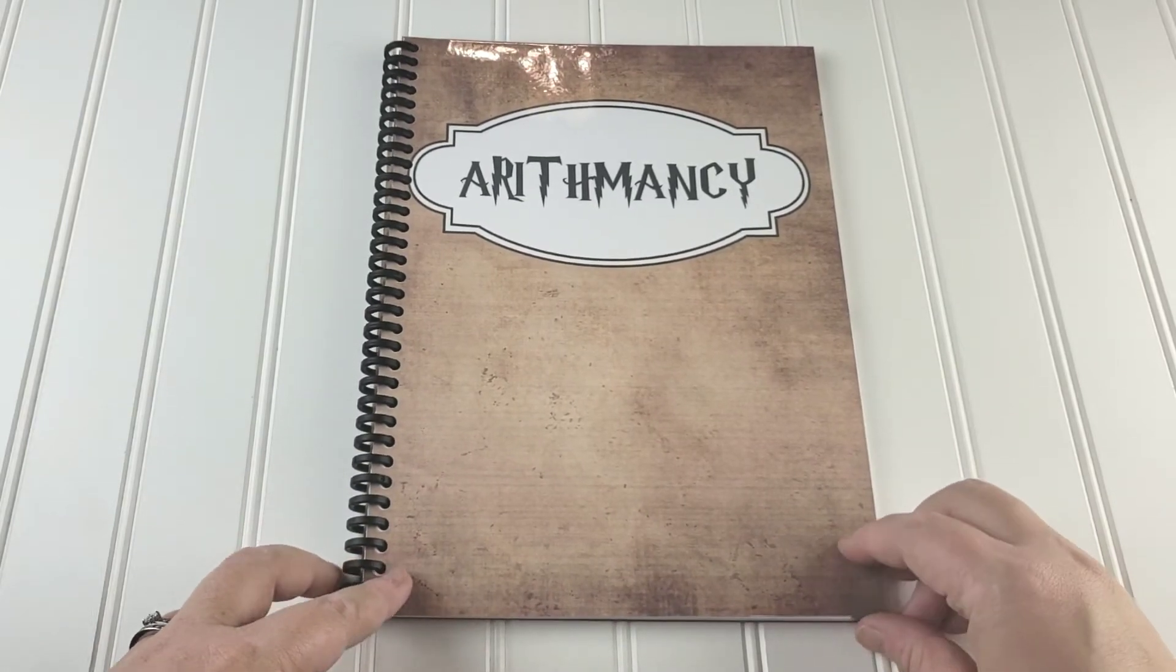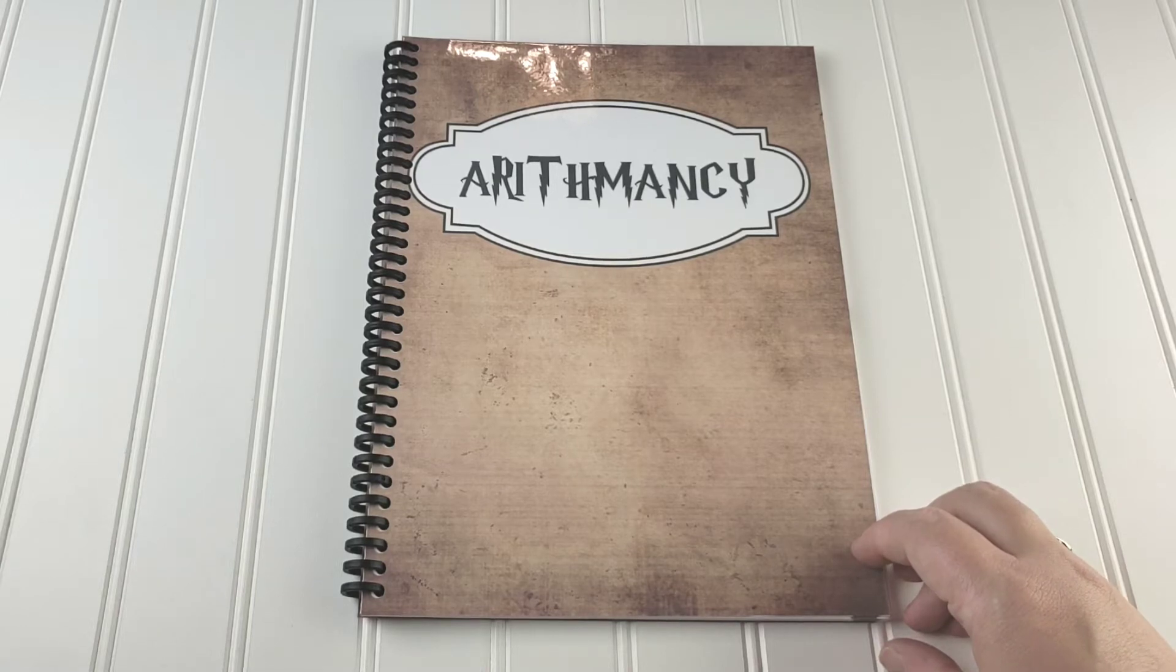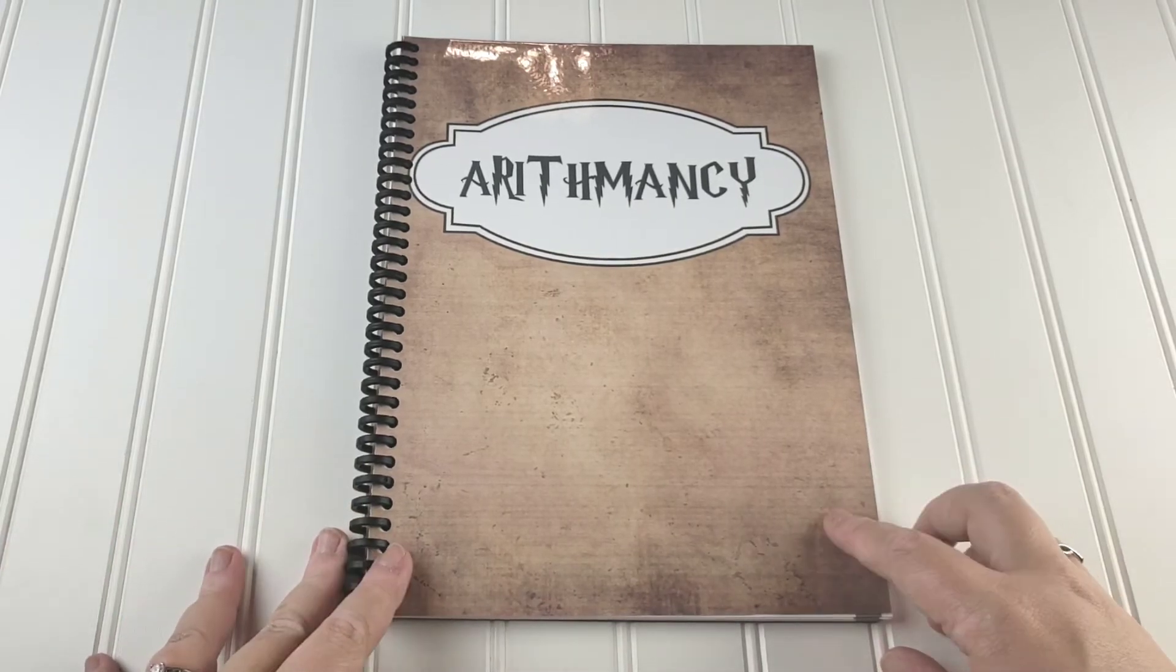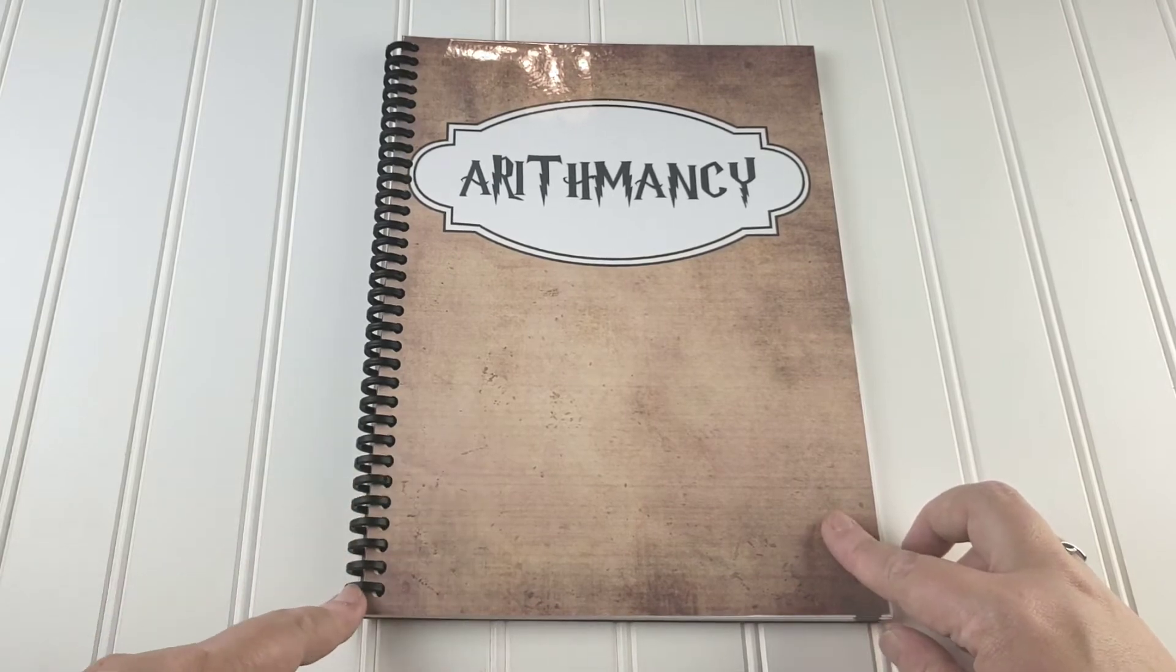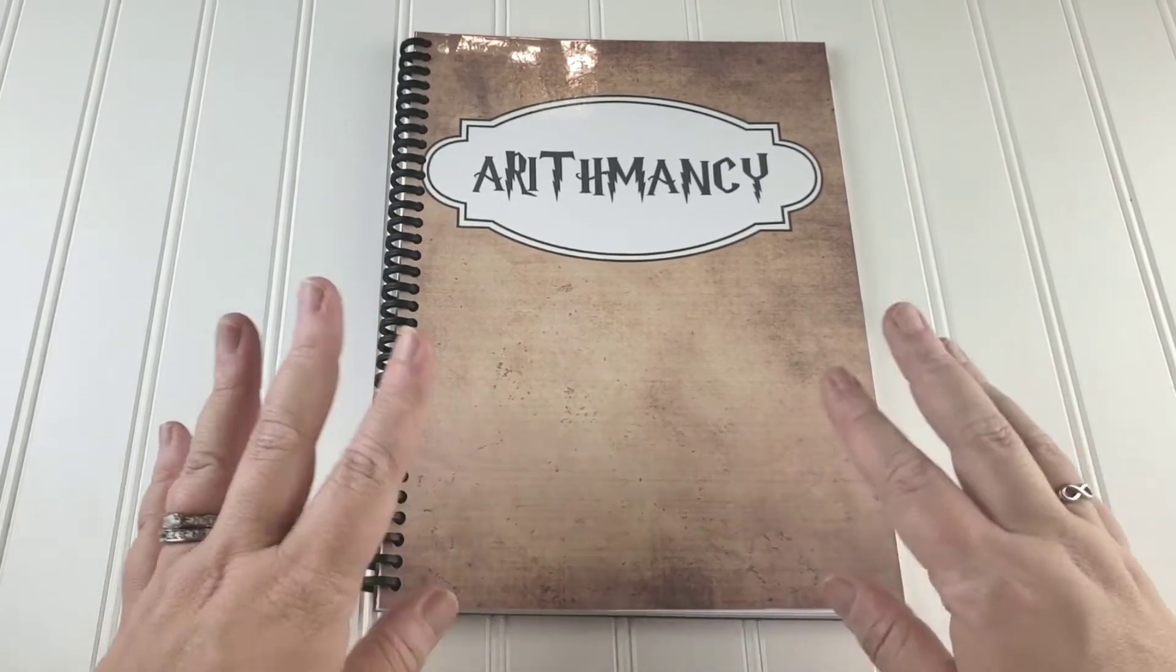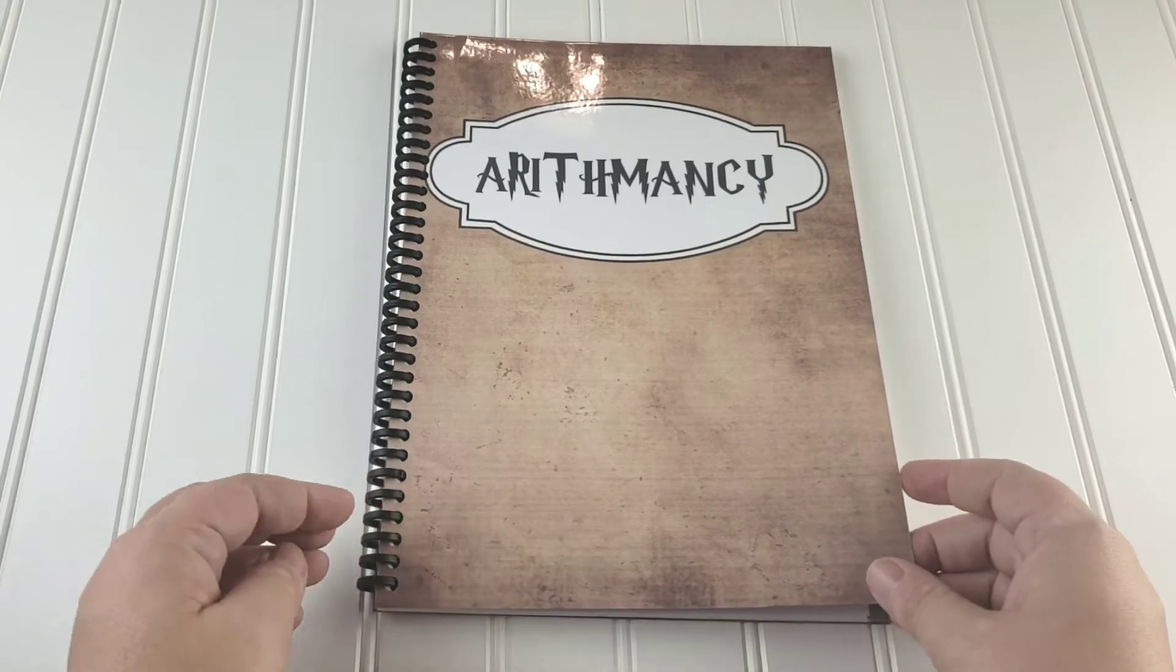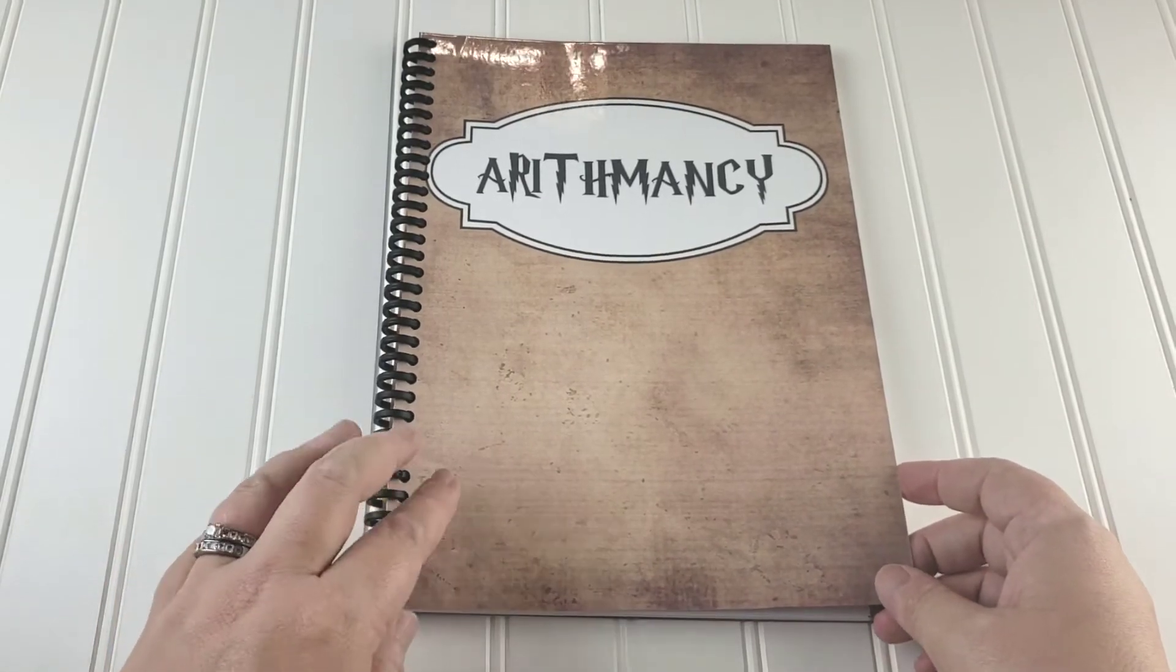We are doing a year at Hogwarts this year. Everything is wizard based so our math is called arithmancy. So I made her a cover and then I used my ProClick binding to spiral bind the pages. So that way it's easier for her to use it. It always lays flat. She can flip it back on itself. It just makes her happy and it's such a simple thing for her to be happy. So I just do it.